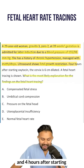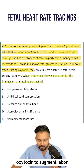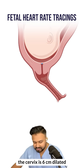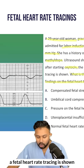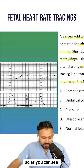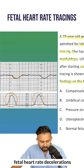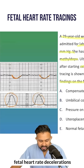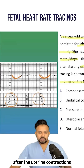Four hours after starting oxytocin to augment labor, the cervix is six centimeters dilated. A fetal heart rate tracing is shown. As you can see, this is the uterine contraction, and we see fetal heart rate decelerations after the uterine contractions.